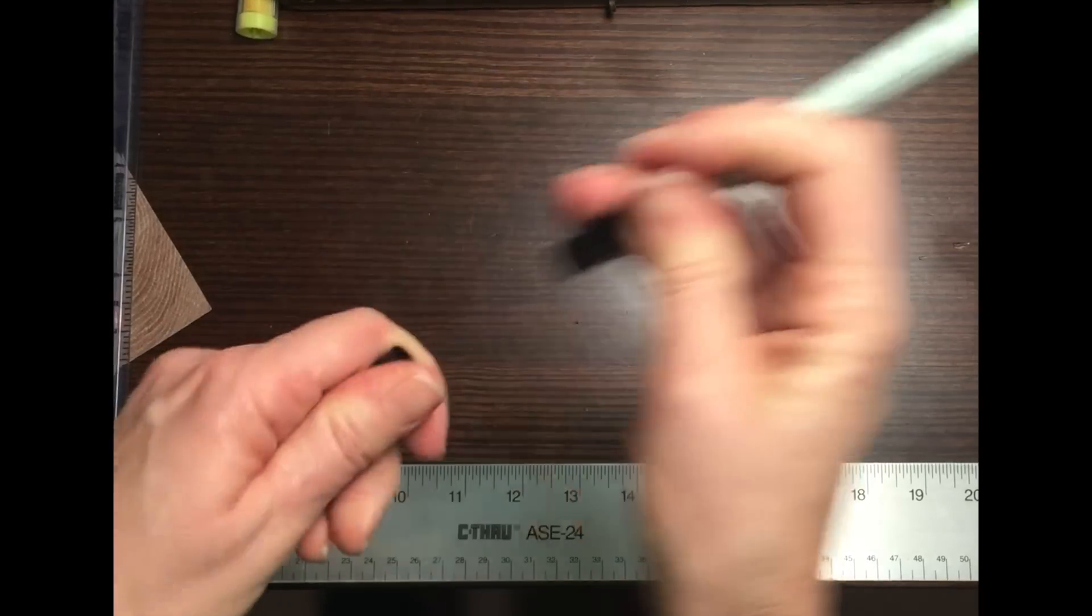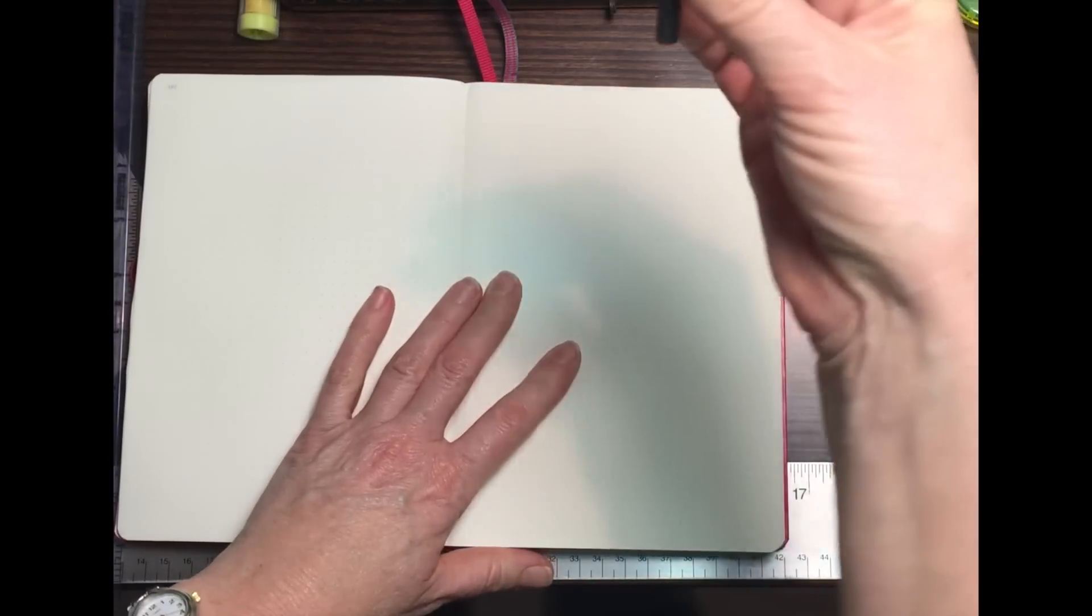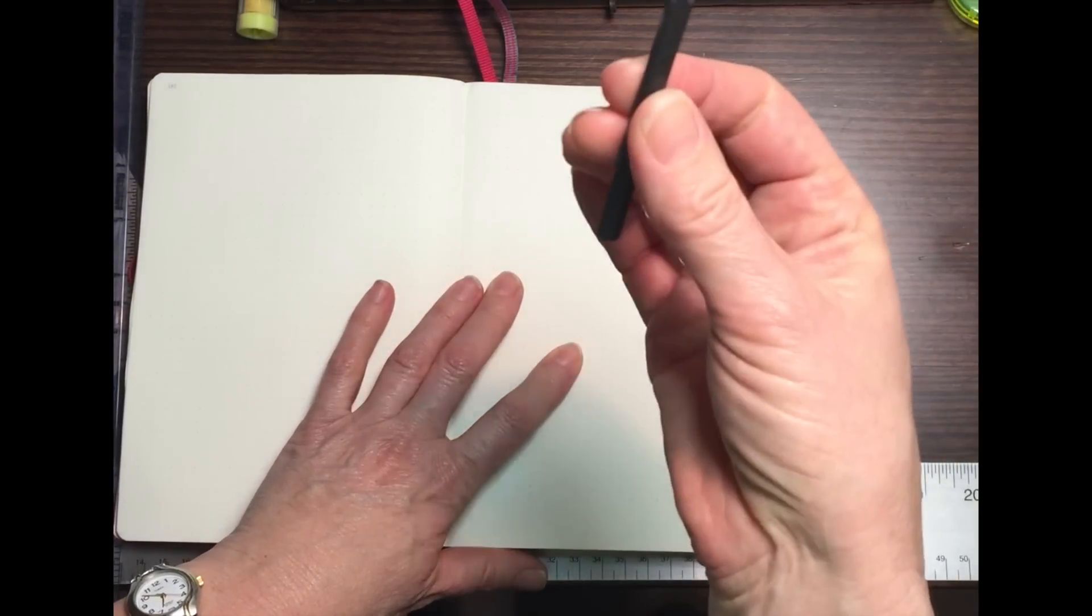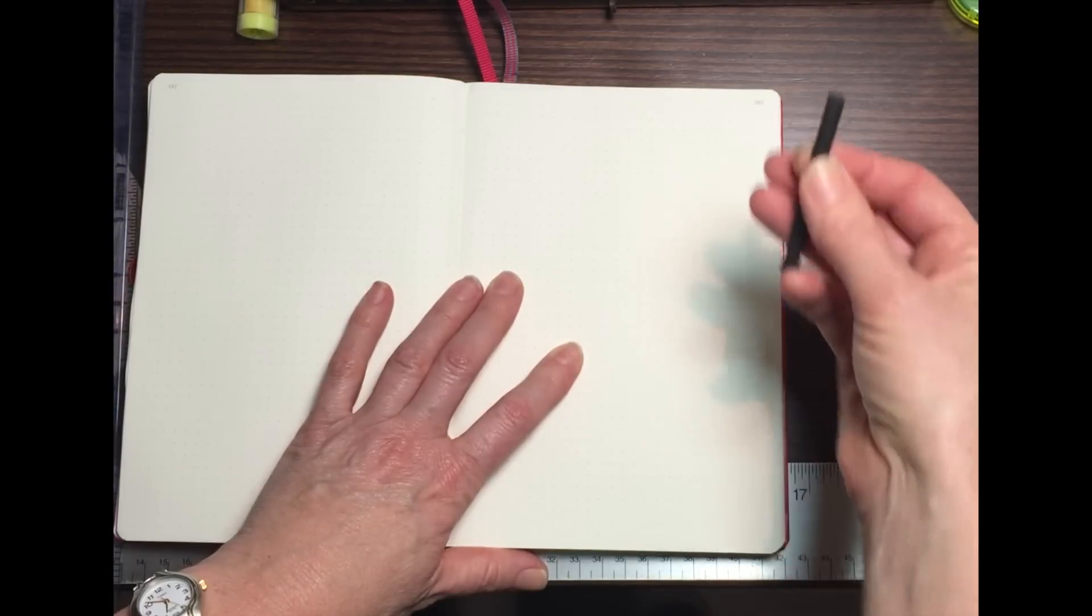And just to give you an idea of how straight a line you are able to get, here's one journal with dots. And since I don't want to ruin this page, I'm going to use a piece of charcoal which is erasable.